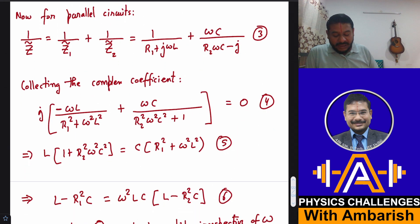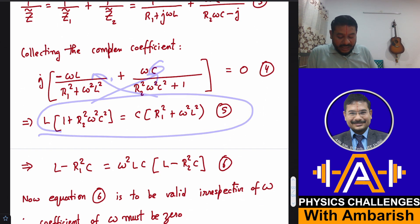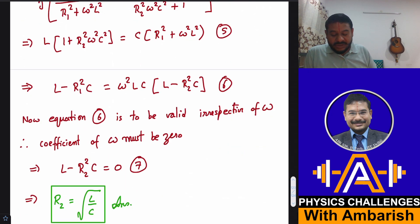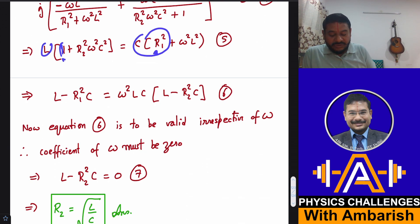So I hope you got this much and now I can just rearrange this equation. One omega you can cancel and then L into this cross multiplication should be equal to C into this cross multiplication. That is what I have written and again I have rearranged this equation. So you rearrange this equation, what do you get? L minus R1 square C. You will get L into 1. So L and C into R1 square you take there and the omega square terms you take to the RHS.